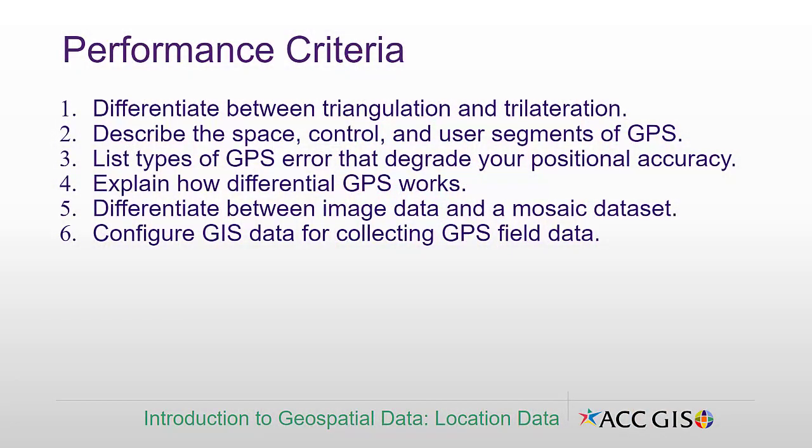You should be able to differentiate between triangulation and trilateration — triangulation is where you calculate your position using angles, and trilateration is where you calculate your position using distances. You should be able to describe the space, control, and user segments of GPS: space are the satellites themselves, control are the ground facilities that manage the satellites, and the user is you holding the receiver. You should be able to list types of GPS error that degrade positional accuracy and explain how differential GPS mitigates that error. You should also differentiate between image data, which is a single raster data set, and a mosaic data set, which is a collection of raster data sets stored and managed as a single object in a geodatabase.